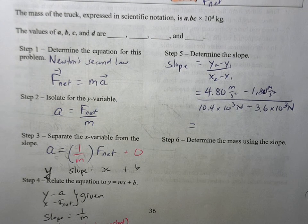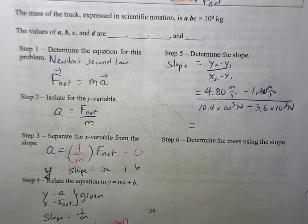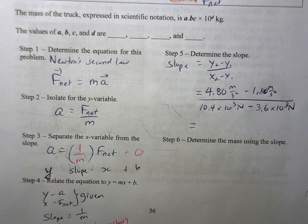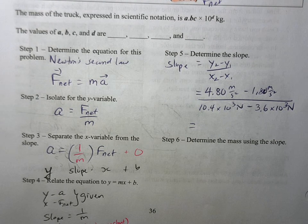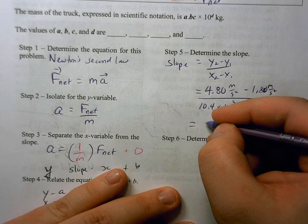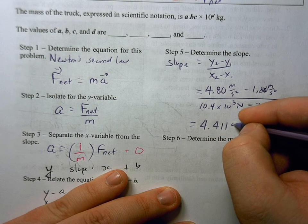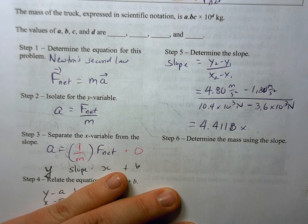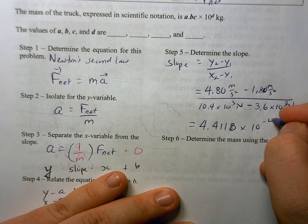So let's find out what this slope is going to be equal to. What I'm going to get based on what I've chosen, I'm going to get about 4.4118 times 10 to the minus 4. I'm not too worried right now about sig digs.